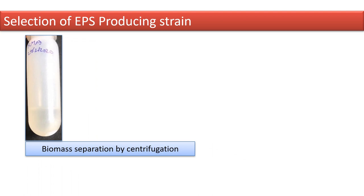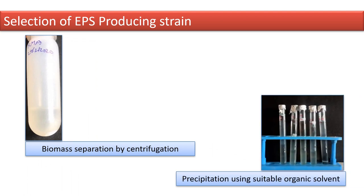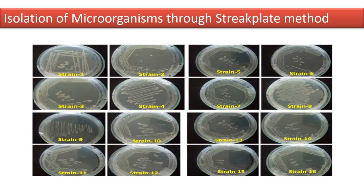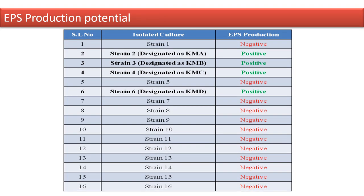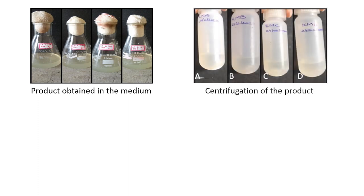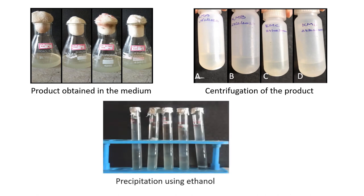This was followed by centrifugation and precipitation of the sample. Here are the 16 plates of quadrant streaking. Out of the 16 plates, the 4 plates which showed desired morphology were selected. The selected strains were inoculated in individual fermentation media. 5 ml of sample was taken and centrifuged at 7000 rpm for 10 minutes and precipitated with twice the volume of ethanol. The precipitation was observed, indicating the production of EPS, and this was compared with the control.